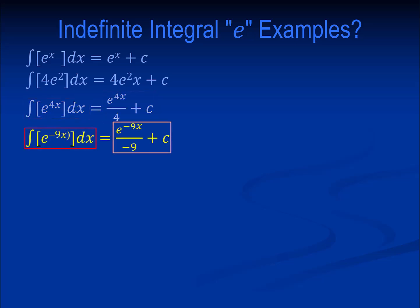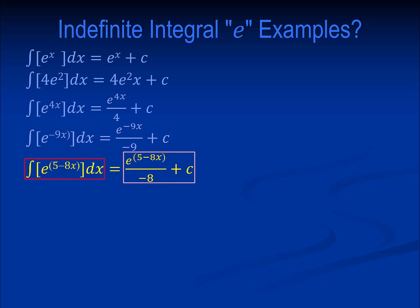The indefinite integral of e to the ninth x equals e to the negative ninth x divided by negative 9, plus c. The indefinite integral of e to the quantity 5 minus 8x equals e to the quantity 5 minus 8x, divided by negative 8, plus c.